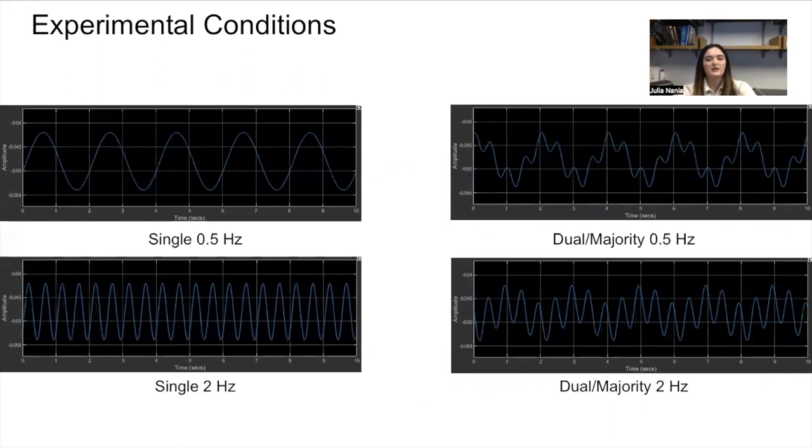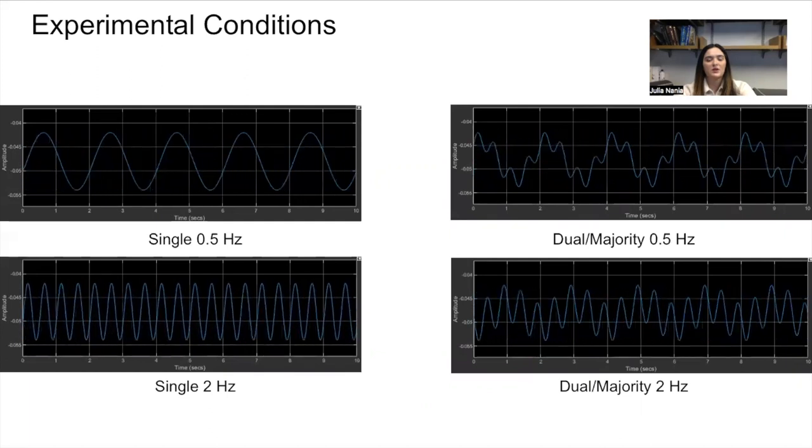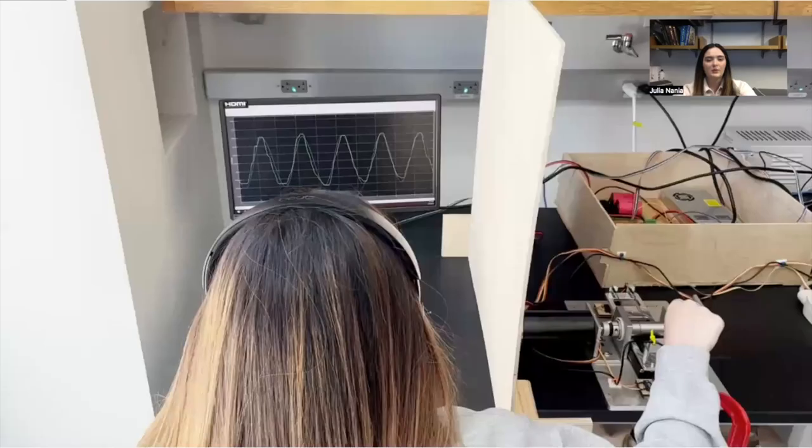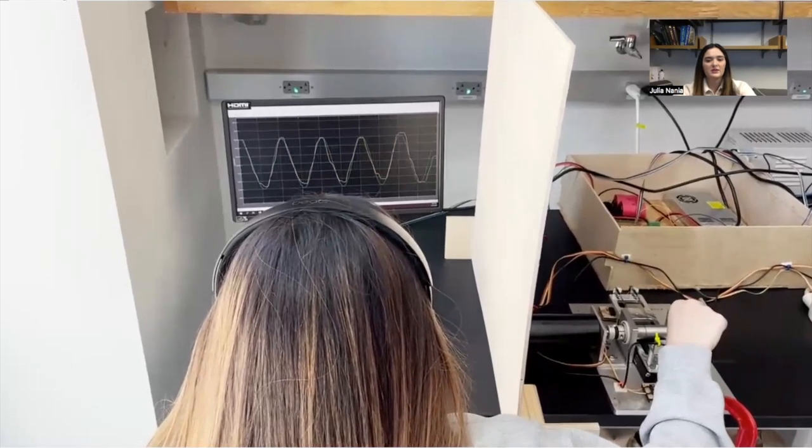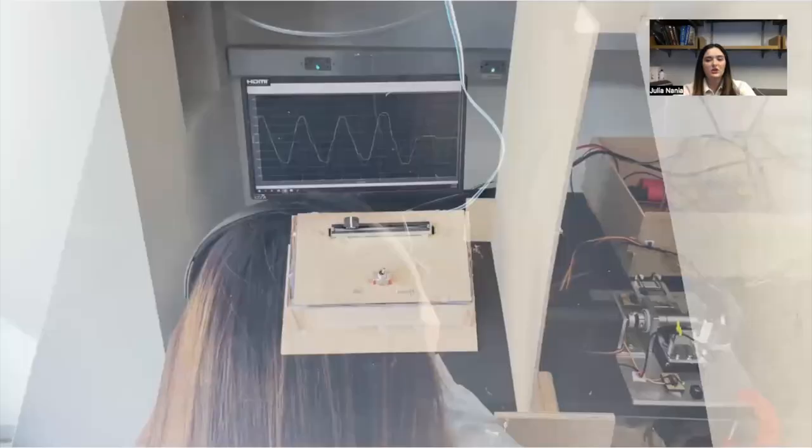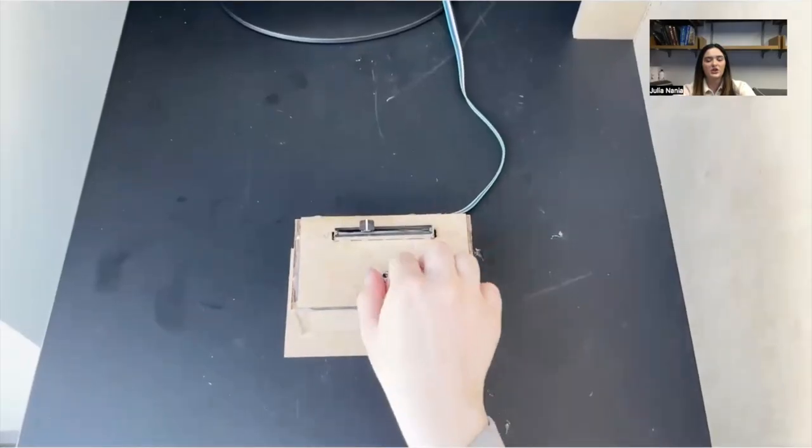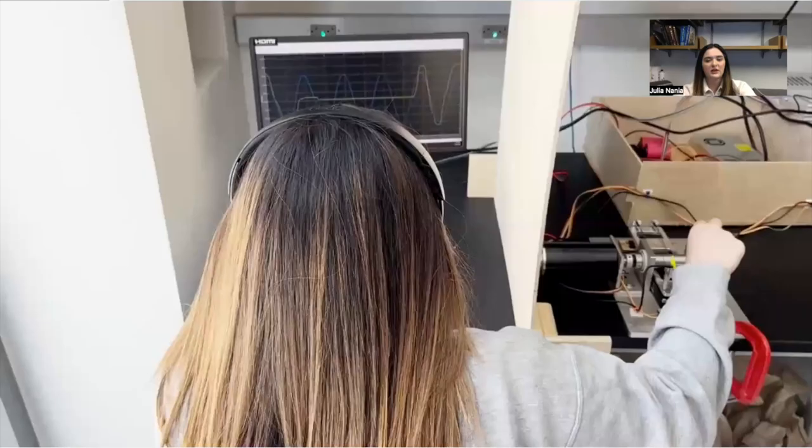They were able to see a simulated scope displaying the signal to track as well as their own movement. Participants could switch between the reference stiffness and the comparison stiffness, which they were instructed to adjust to match the reference stiffness in each trial using a fader-type linear potentiometer while simultaneously tracking the presented signal.